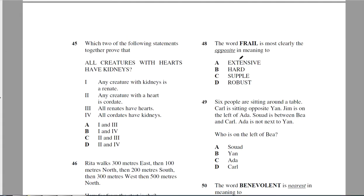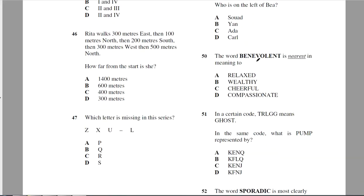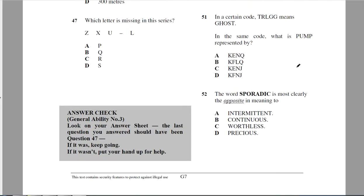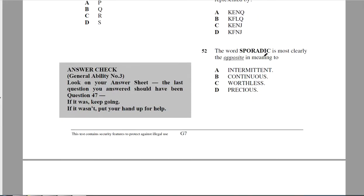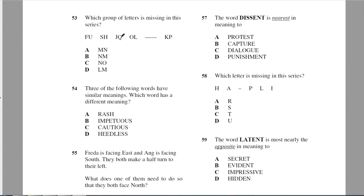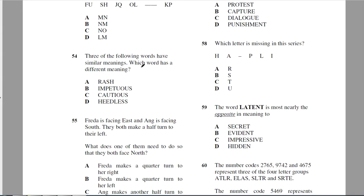I'm hoping I can get about half of it done. The word frail is most nearly the opposite to robust. Robust means strong and healthy. Benevolent means kind, so it's compassionate. Ben words are always good words. Sporadic is the opposite of continuous. Sporadic means intermittent. Three of the following words have similar meanings. Rash, impetuous, heedless, so it's cautious.